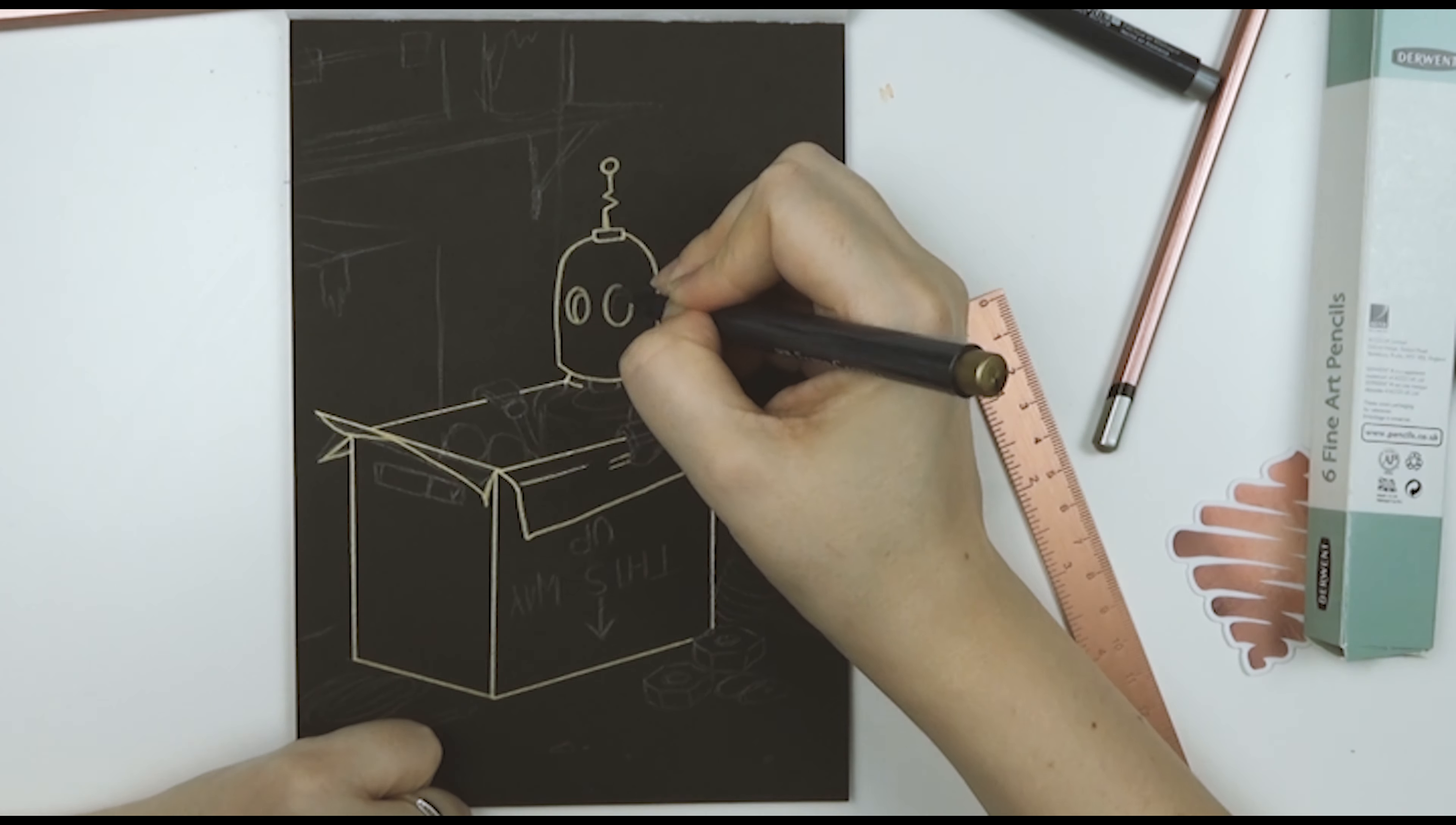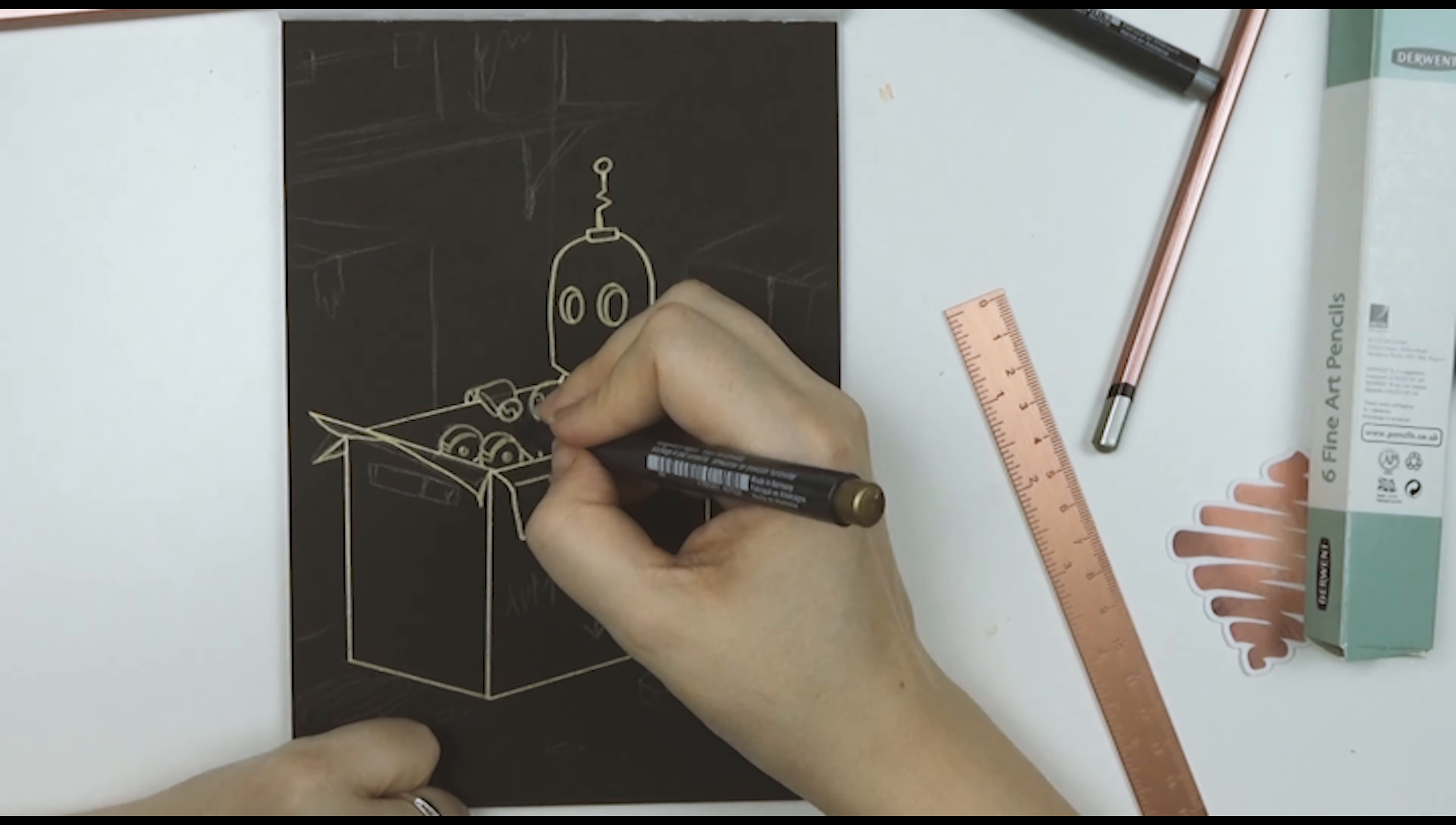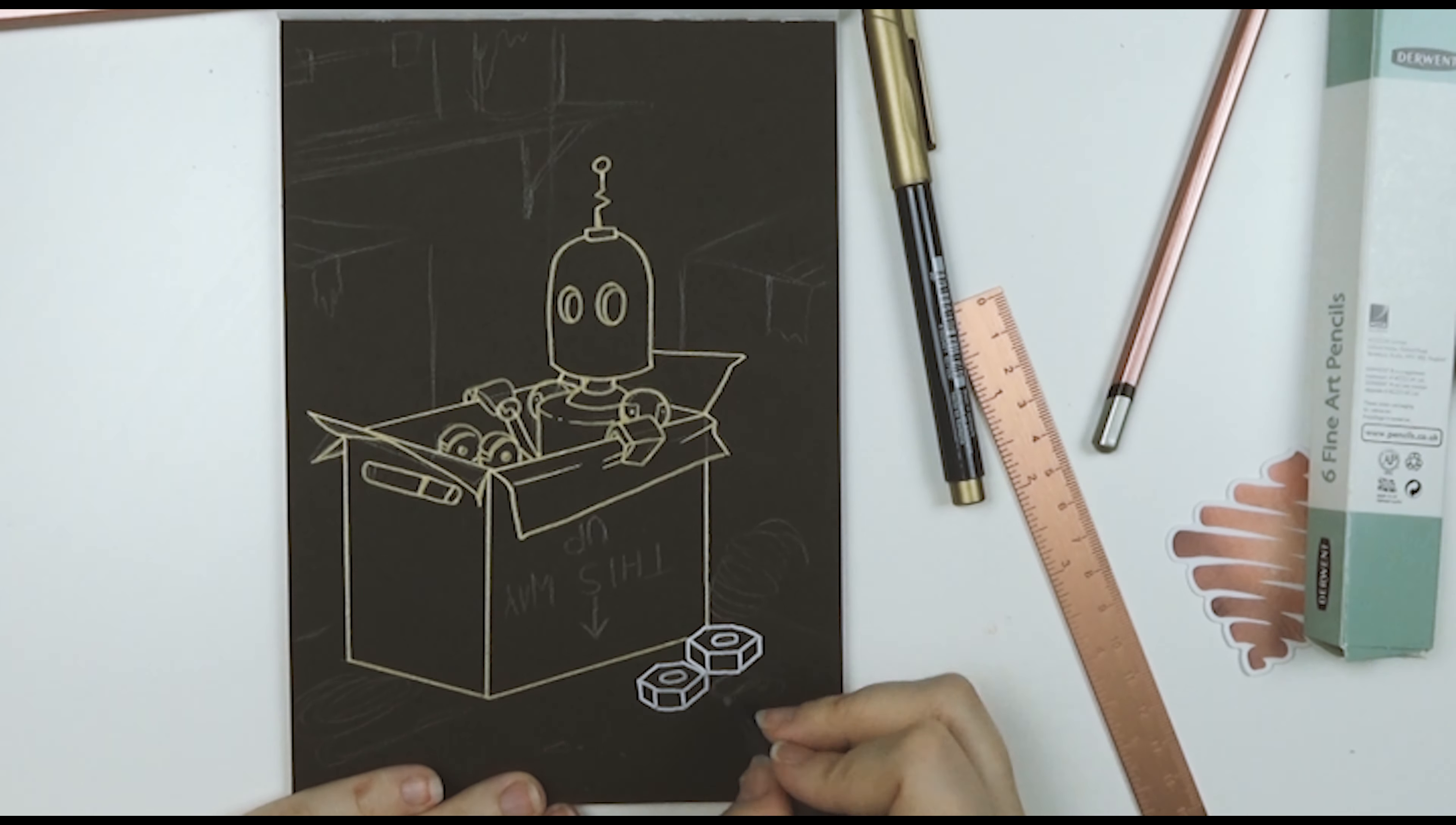but I thought that I would outline it with the two different colored metallic pens. So I thought to try and give it some presence, I'd do the robot in the gold and everything else in the silver. I probably should have done this the other way around because as soon as I start using the silver, I realized that that's a lot brighter than the gold.